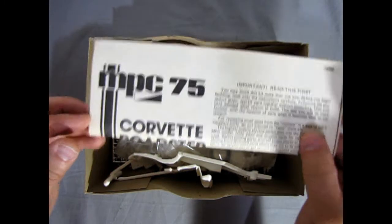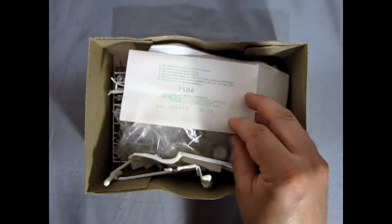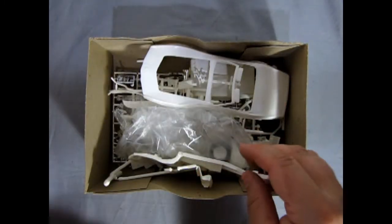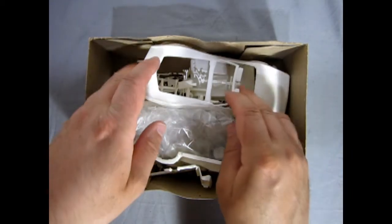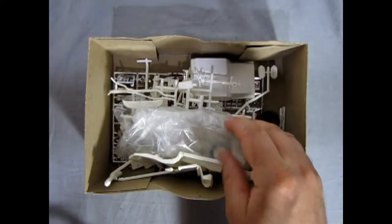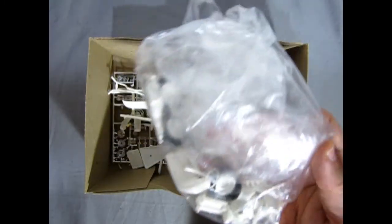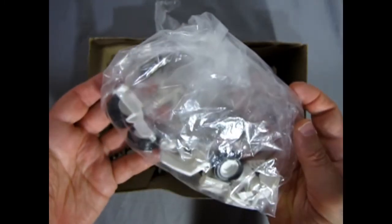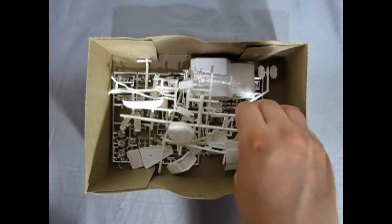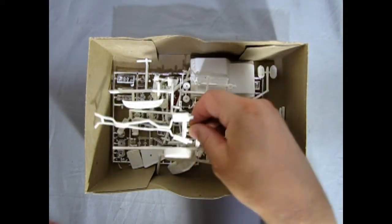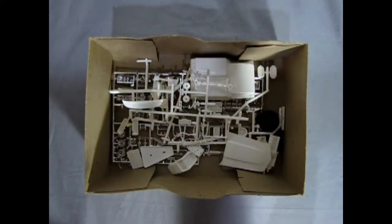Now here we have our instruction sheet that came with the kit as well as our decal sheet which we'll take a look at toward the end. Then we've got all our white components like the body and the chassis and front nose. This is an old kit so somebody obviously had taken a look at it before in the past.